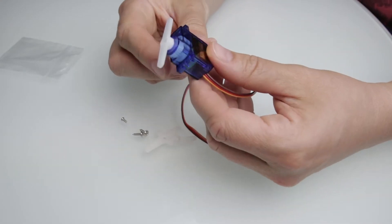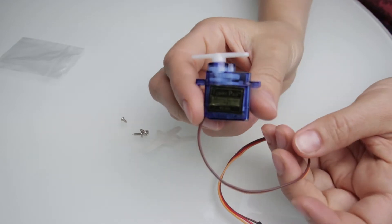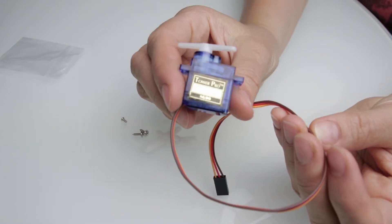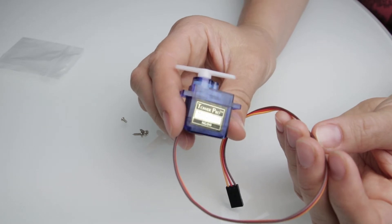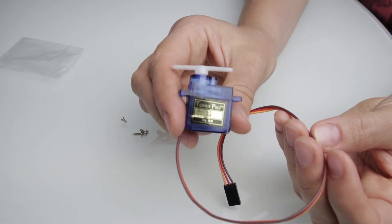The servo has three wires of which the brown one is the ground wire and should be connected to the ground port of UNO. The red one is the power wire and should be connected to the 5 volt port, and the orange one is the signal wire.